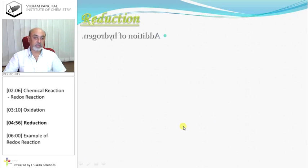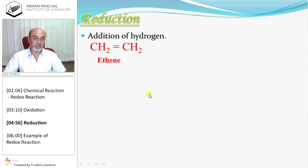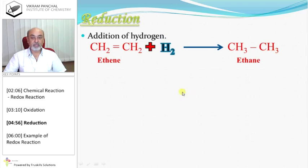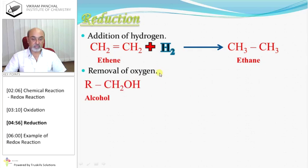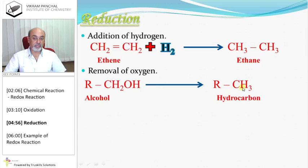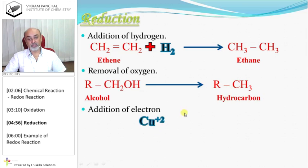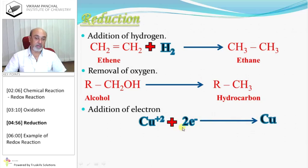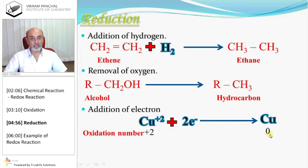Reduction. Addition of hydrogen, like ethene to alkyne — when hydrogen is added the product is ethane, so that is reduction. Removal of oxygen is also reduction: alcohol has one oxygen; if you remove oxygen, the product is CH3, a hydrocarbon. Addition of electron is also reduction: copper²⁺, if you add 2 electrons, the product is copper metal. When electrons are added, you write them along with the reactants on the left-hand side. During reduction, oxidation number decreases.